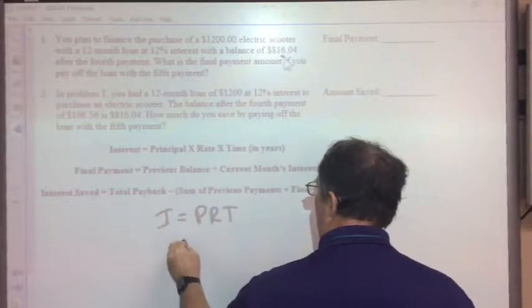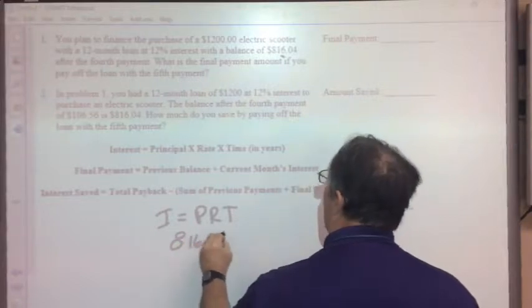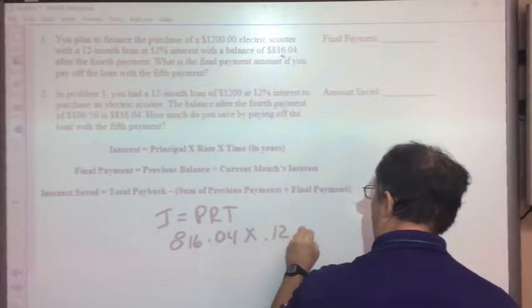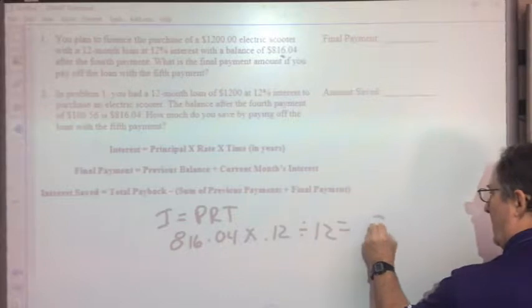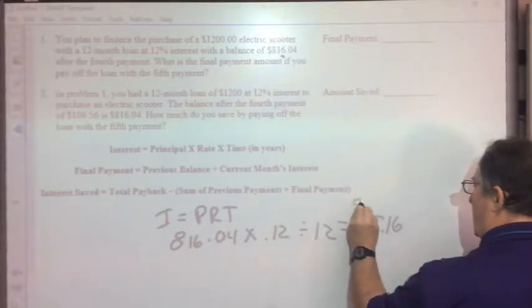Figure out what the interest on that balance is, which is the principal times the rate, divided by months, divided by 12 months per year. So $816.04 times 12% divided by 12 months per year is going to be $8.16. That is the interest.